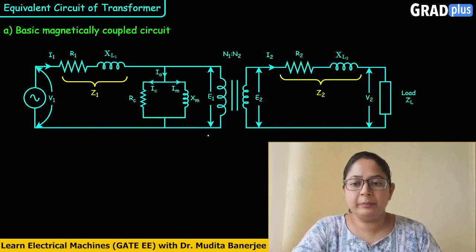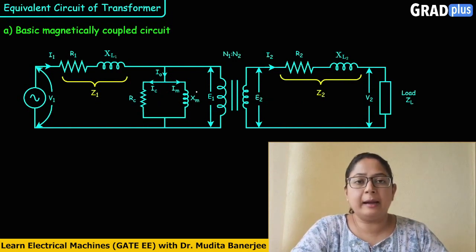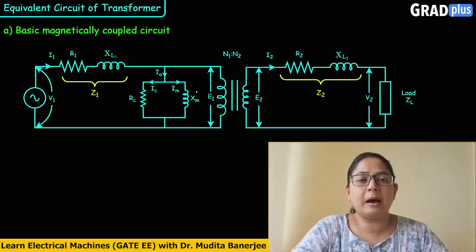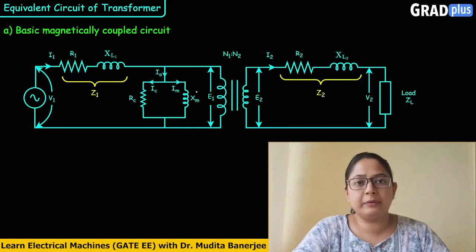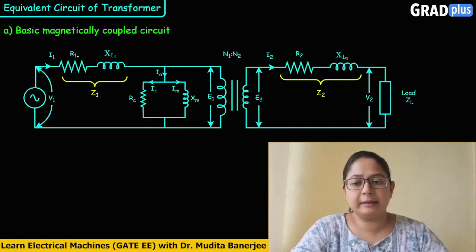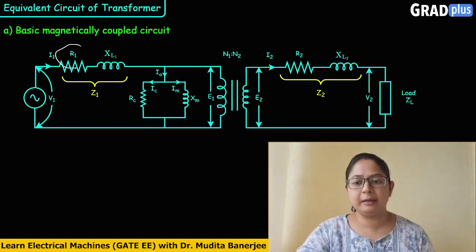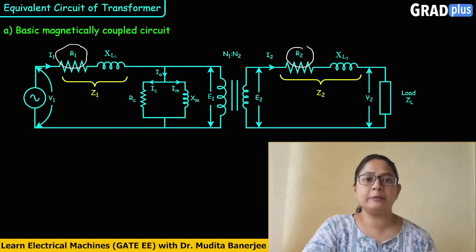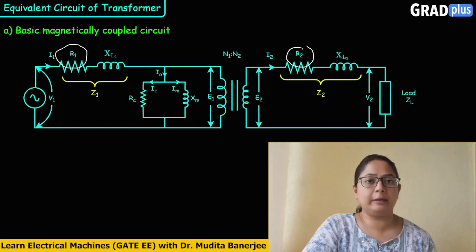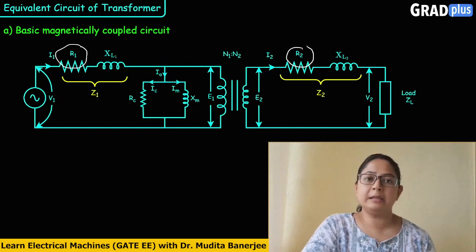In this circuit diagram, it shows a basic magnetically coupled circuit. In a practical transformer, the winding parameters are also present. The winding parameters are winding resistance and leakage reactance. There are two windings — primary and secondary. For the primary winding, resistance is represented by R1, and for the secondary winding, it is represented by R2. The resistances present in the copper windings result in copper losses, shown by the heating of the winding.